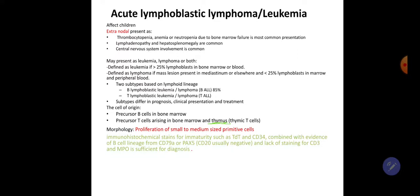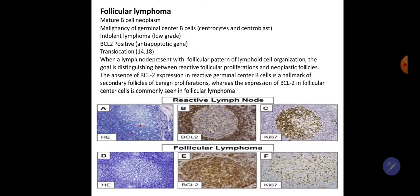The two subtypes are B lymphoblastic leukemia/lymphoma, comprising 85% of cases, and T lymphoblastic leukemia/lymphoma. Subtypes differ in prognosis, clinical presentation, and treatment. The cell of origin is the precursor B cell in the bone marrow and precursor T cell arising in the bone marrow and thymus. Morphology: proliferation of small to medium-sized primitive cells. Immunohistochemical stains for immaturity include TdT and CD34, combined with evidence of B cell lineage from CD79A or PAX5, CD10, and lack of staining for CD3.